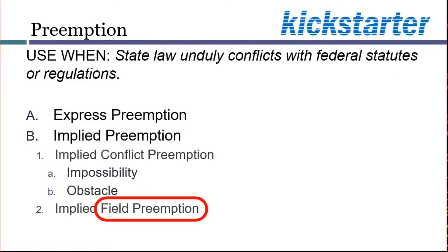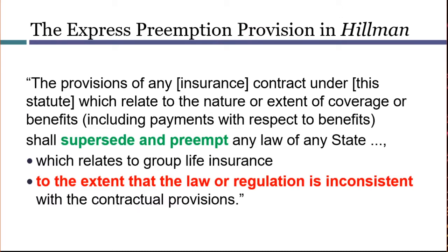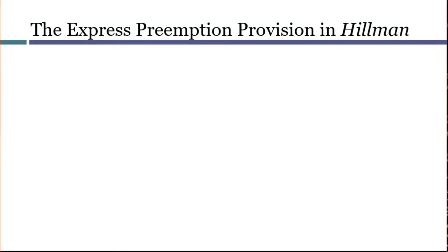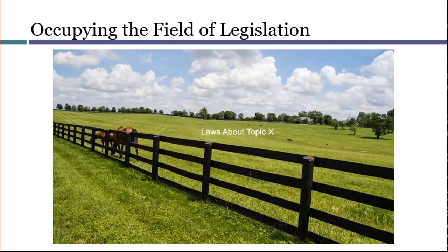Finally, we can consider if the state law was enacted within a field that Congress had effectively claimed for itself. As we saw in the last video, Congress actually made clear in the statute that it did not want to completely occupy the field of group life insurance — state laws are preempted under this statute only to the extent they are inconsistent. So there is no express field preemption. For educational purposes, though, let's imagine that we don't have this statute at all. Instead, we have to decide, based on the remainder of the statute, whether Congress implied a desire to occupy the field.